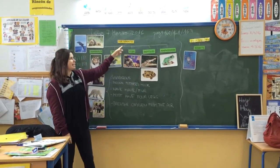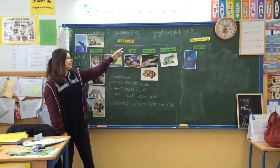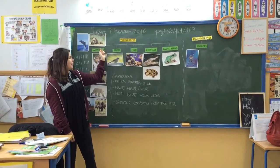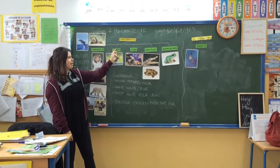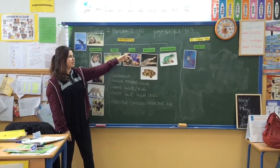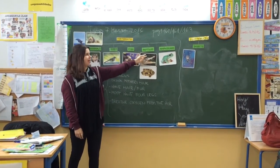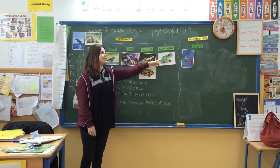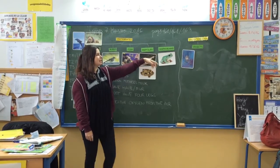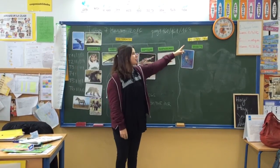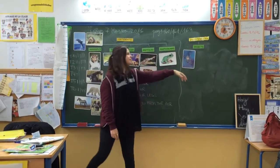If an animal is a vertebrate, it can be a mammal, a bird, a fish, a reptile or an amphibian. If an animal is an invertebrate, it is an insect.